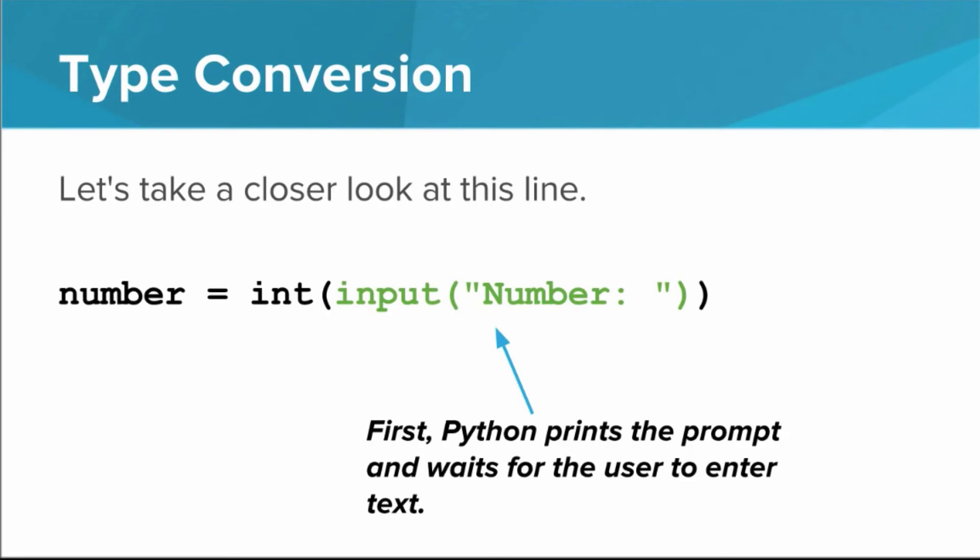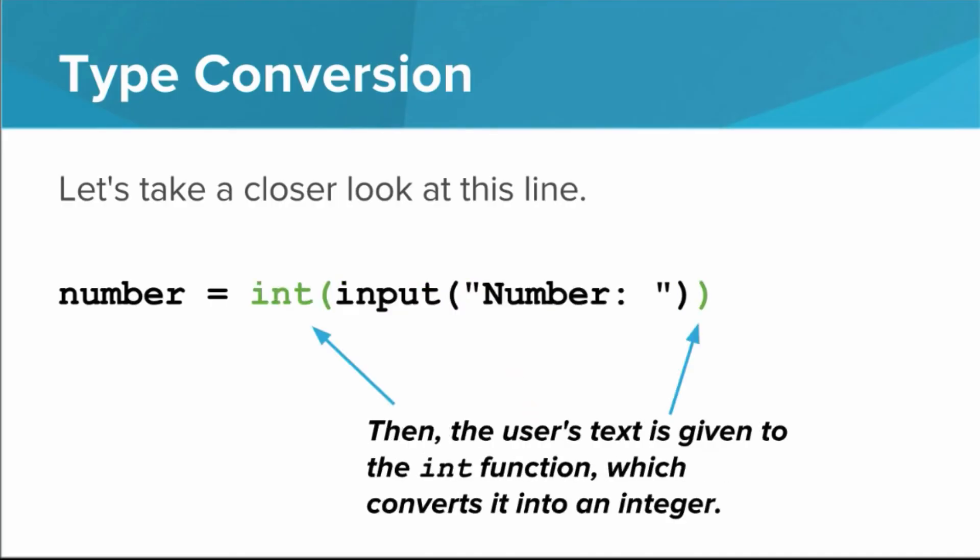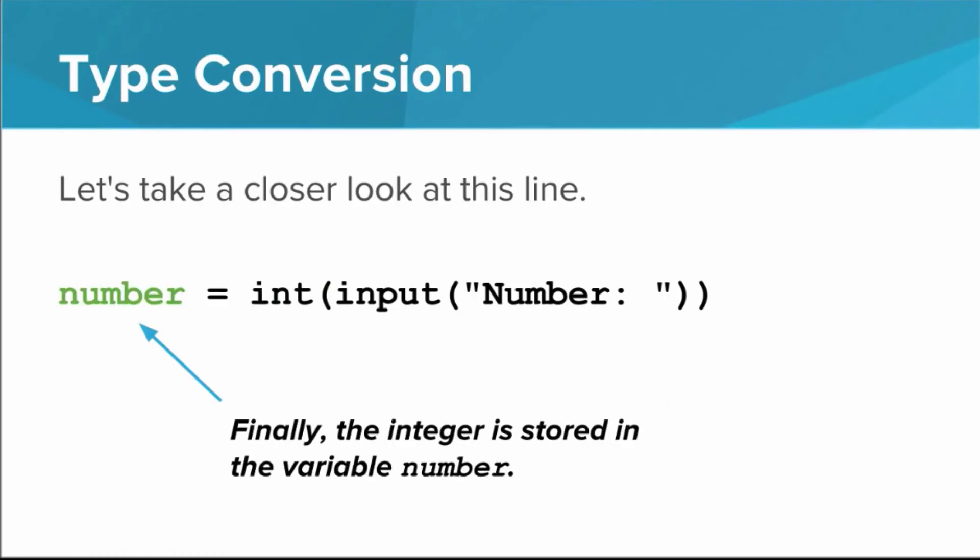First, the input function runs as it normally would. Python prints a prompt and pauses while the user enters text. Then whatever the user types is given to the int function, which converts it from a string into an integer. Finally, that integer is stored in the variable called number.